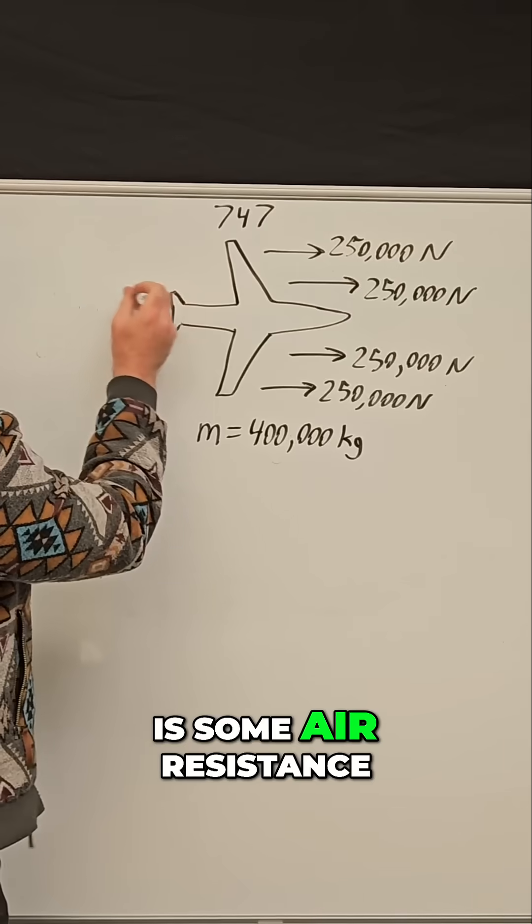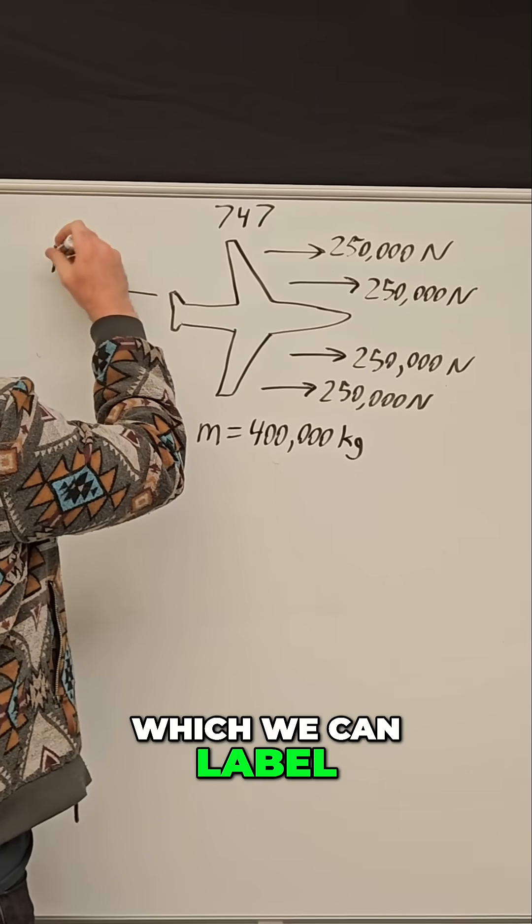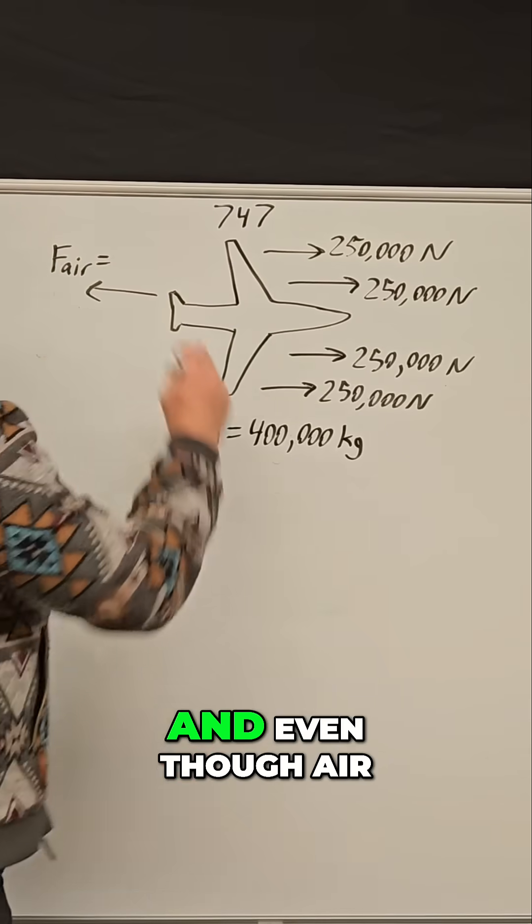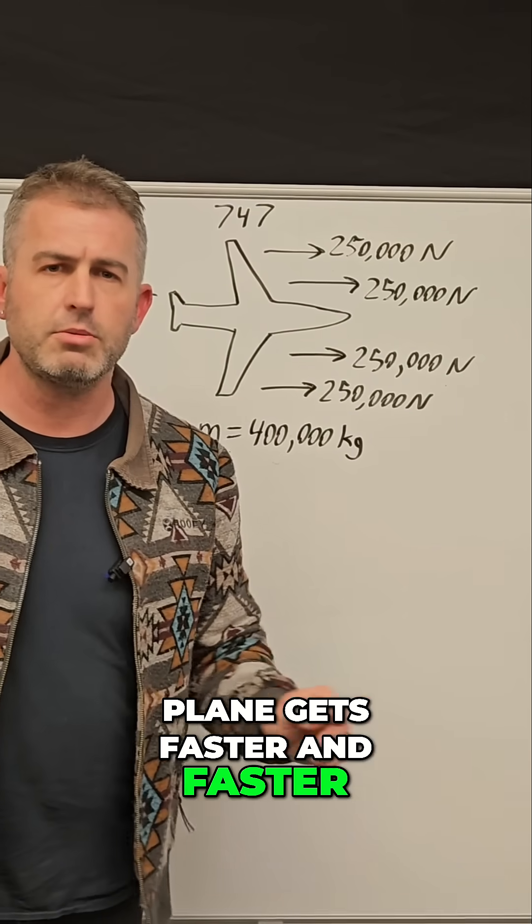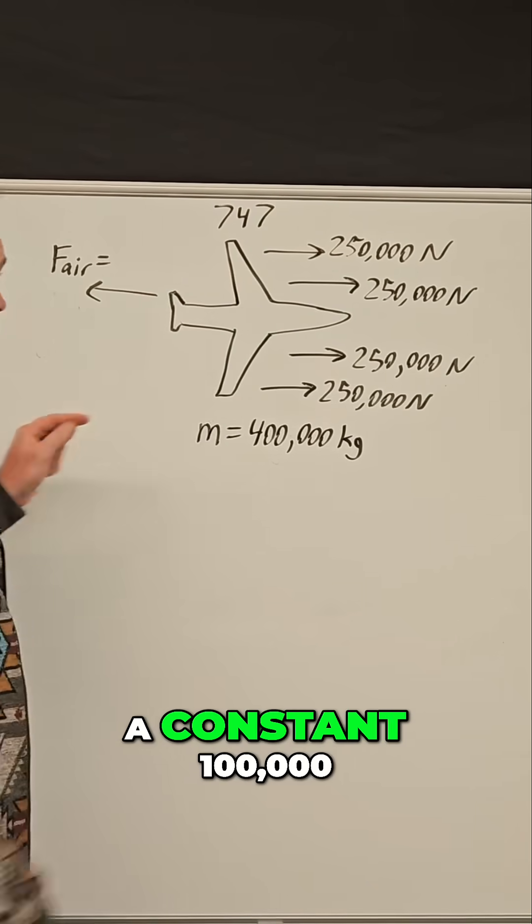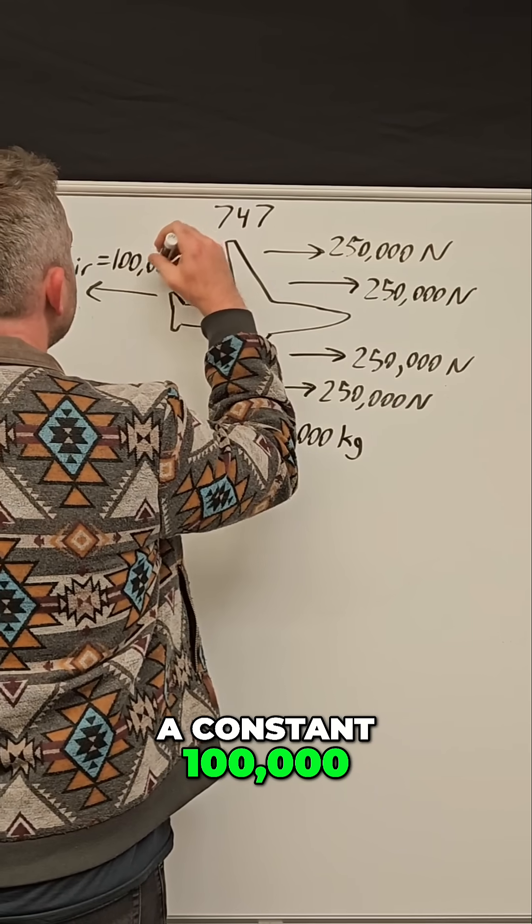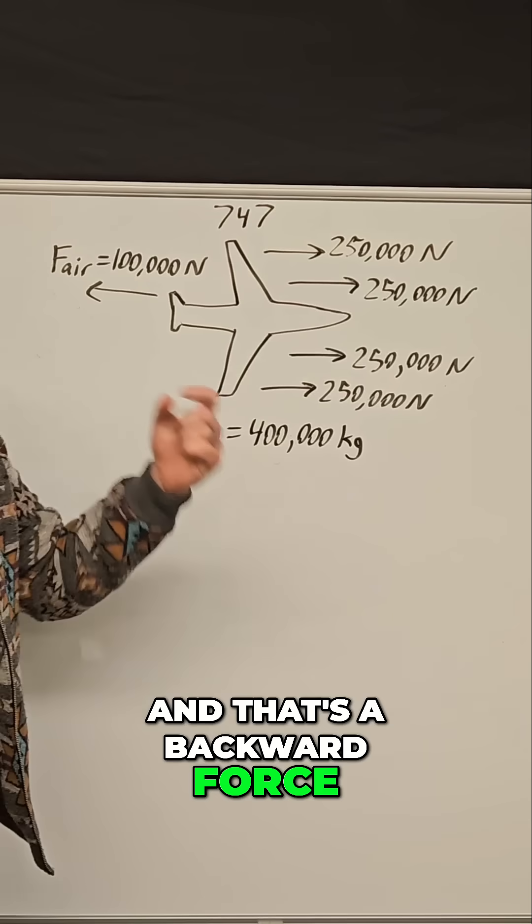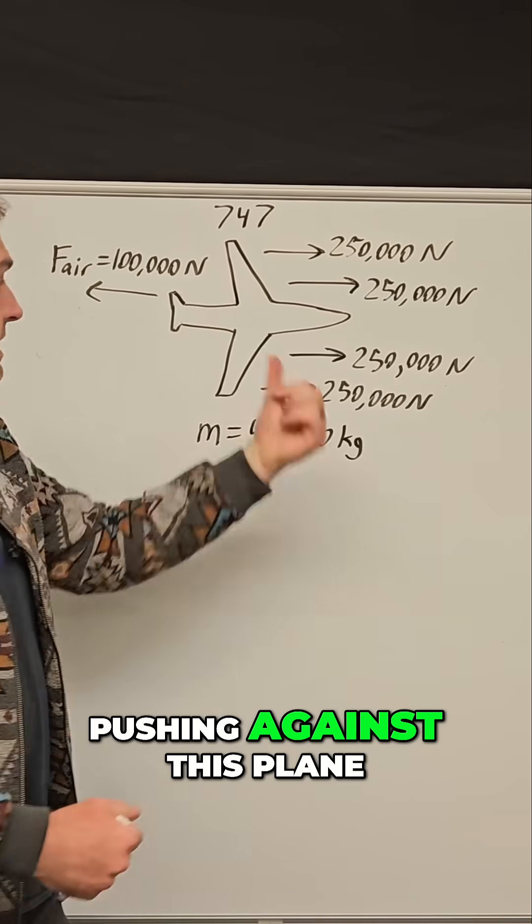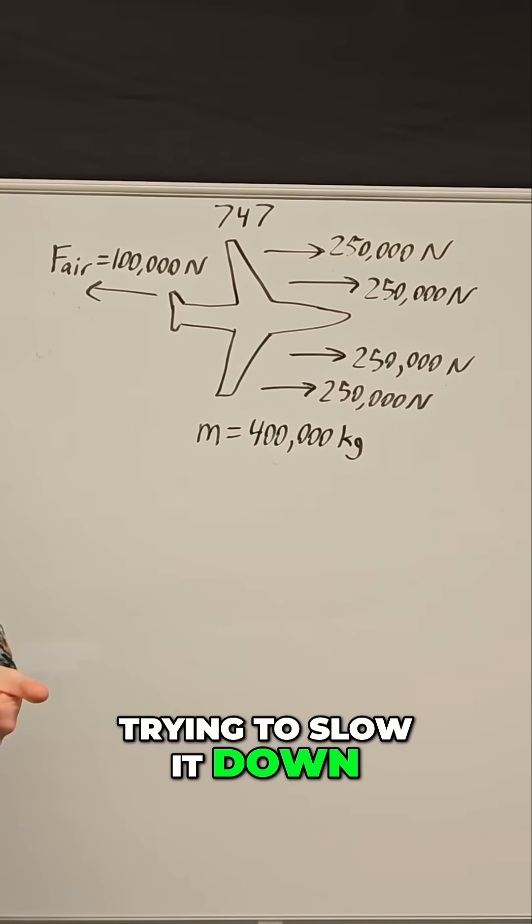There is some air resistance which we can label as F_air. Even though air resistance increases as the plane gets faster, we're going to simplify it and say it's a constant 100,000 newtons. This is a backward force—the air particles pushing against the plane trying to slow it down.